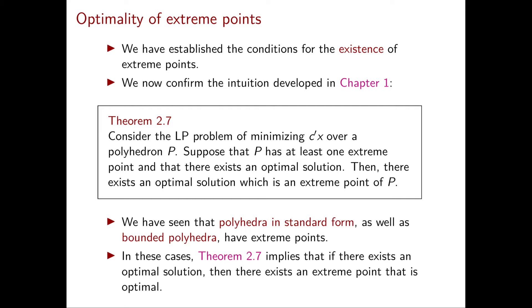We're going to prove Theorem 2.7, but before that, let me make a couple of comments. The first is that this theorem finally confirms the intuition that we developed in chapter 1 — namely, that in most linear programming problems, there's always an optimal solution which is an extreme point of P. And this is the intuition that we formalized as the third fundamental property of linear programming problems at the beginning of chapter 2.